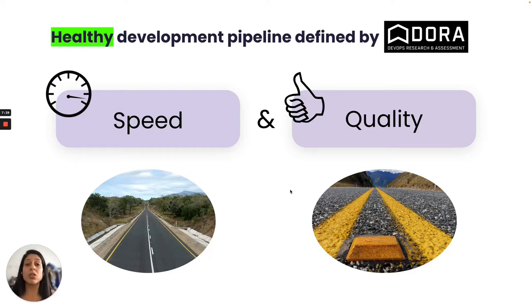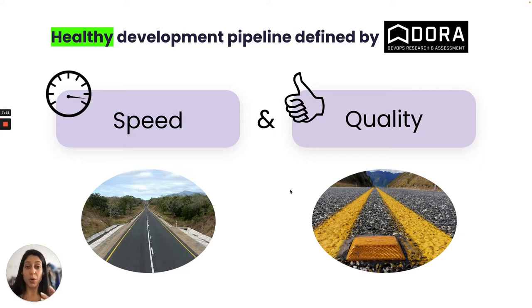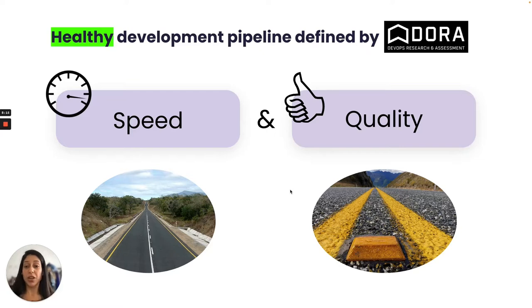Think about roads construction and vehicles that use the road. Your dev pipeline is represented by the roads, while code changes are represented by the vehicles. Roads can be made of different materials — highways, carriageways, city ways — and your speed depends on many factors. The obvious one is the road itself: you can drive faster on a highway than a city road. But not all vehicles share the same speed; motorcycles can be much faster than trucks.